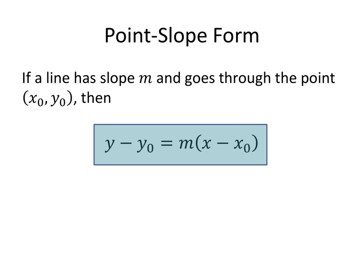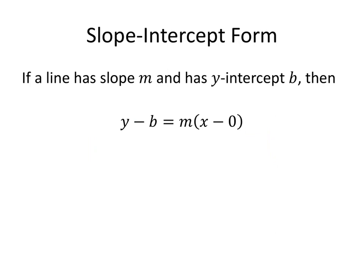But sometimes we're given different information. Sometimes we're given the slope and the intercept, specifically the y-intercept of a line. So if we take that y-intercept, remember when we say the y-intercept of the line is some number b, all that means is that the point (0, b) is on the line. That's just another way of saying that fact.